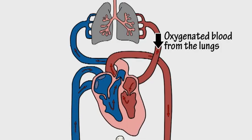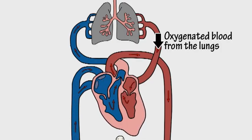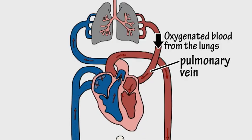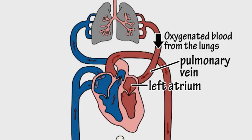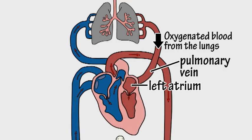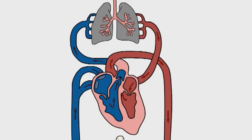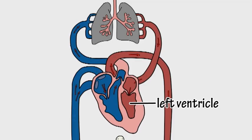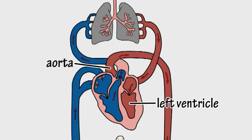The bright red oxygenated blood from the lungs returns to the heart through the pulmonary veins, entering the upper left chamber of the heart called the left atrium. This blood passes into the left ventricle whose powerful muscular contractions squeeze it out through an artery called the aorta.